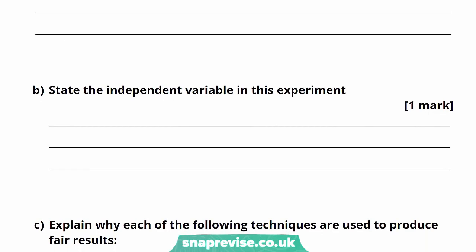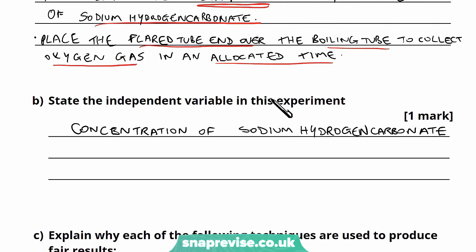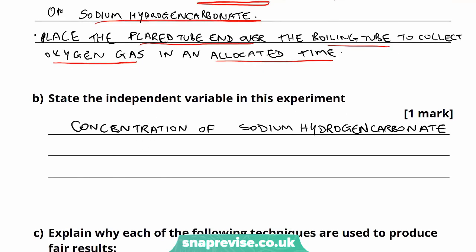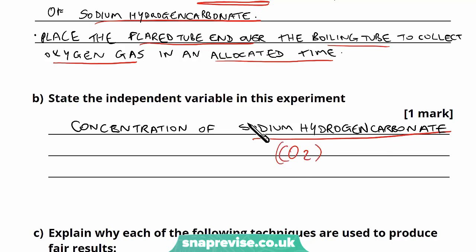Part B says: state the independent variable in this experiment. The independent variable is the one we're deliberately changing to see how it affects the rate of photosynthesis. In this case that is the concentration of sodium hydrogen carbonate, or CO2. But it's best to be specific and name the actual source of CO2 they're using.